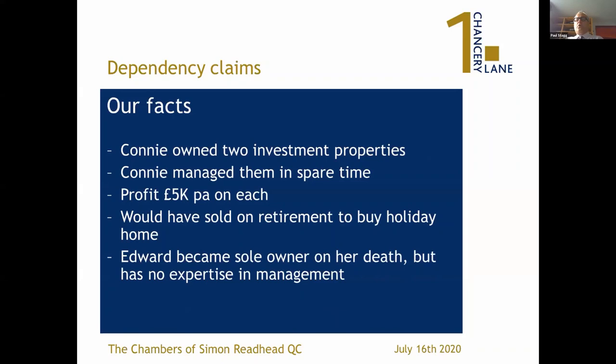Connie also owned two investment properties and she managed them in her spare time, making a profit of about £5,000 per annum on each after tax. Their plans were to sell them when they retired to buy a nice holiday home. Edward became the sole owner of those properties on Connie's death, but he doesn't have the expertise that she had acquired over the years in managing them.